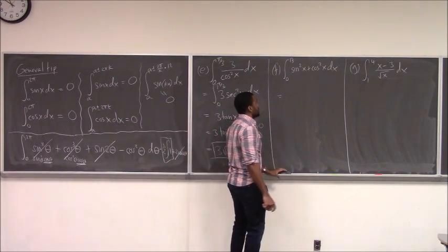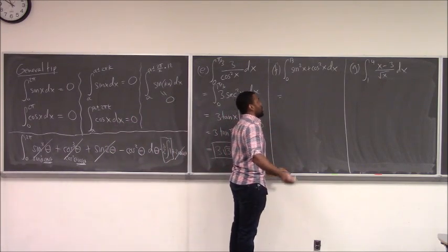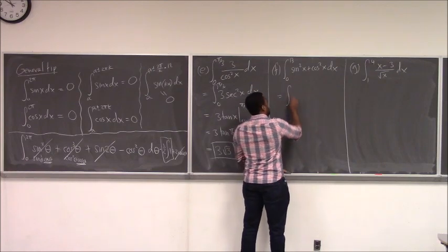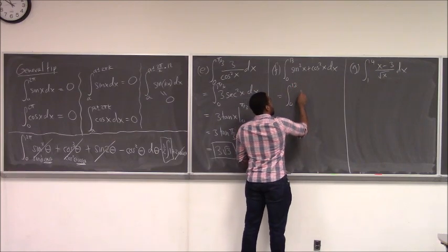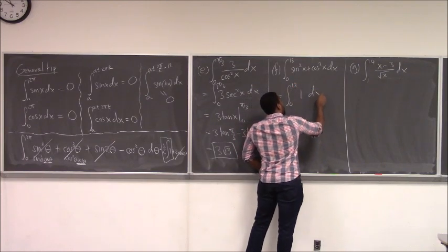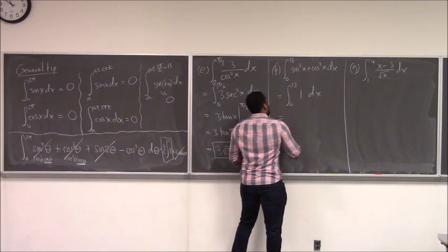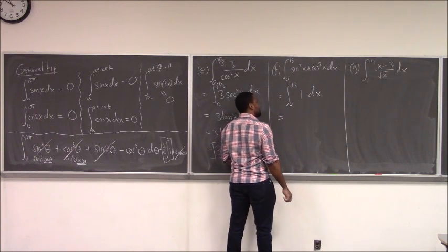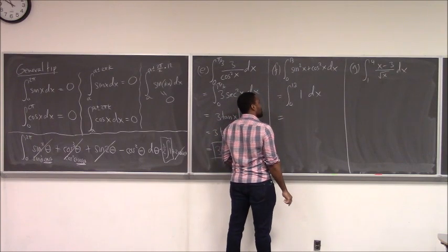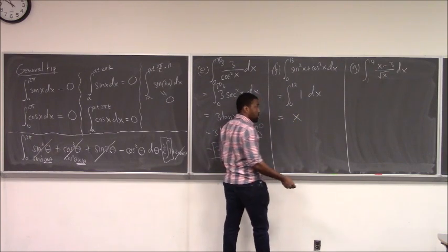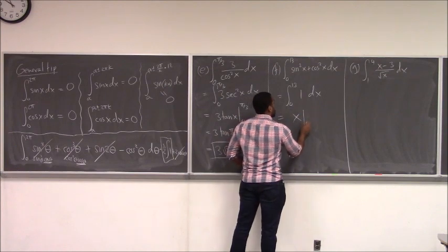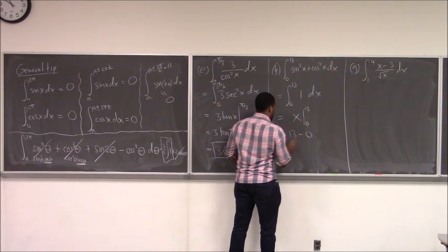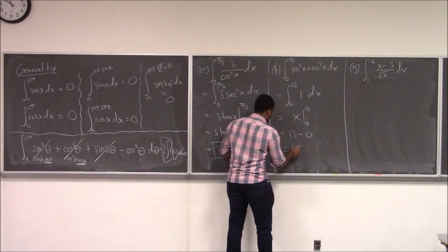For the next example, after simplification it's just one. The anti-derivative of one is x. Evaluating from zero to thirteen gives thirteen minus zero, so the answer is thirteen.